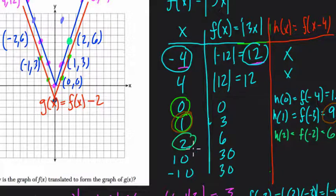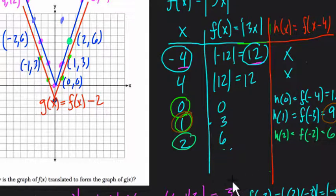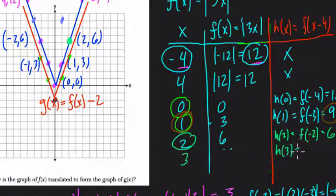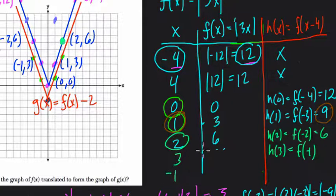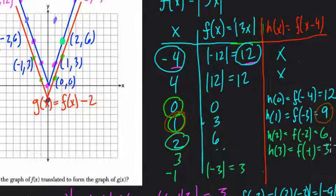Let's do one more — let's use three as an example. H(3) equals F(3 minus 4), which is F(negative one). F(negative one) equals the absolute value of three times negative one, or absolute value of negative three, which is three. So H(3) equals three — the point is three comma three, right here.